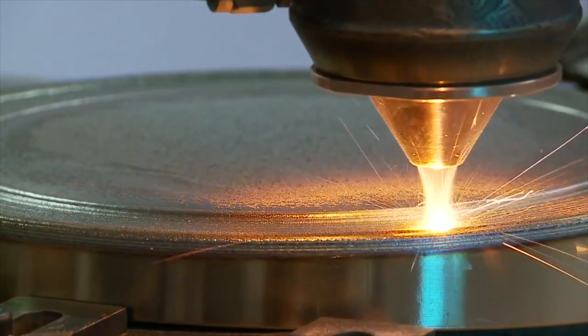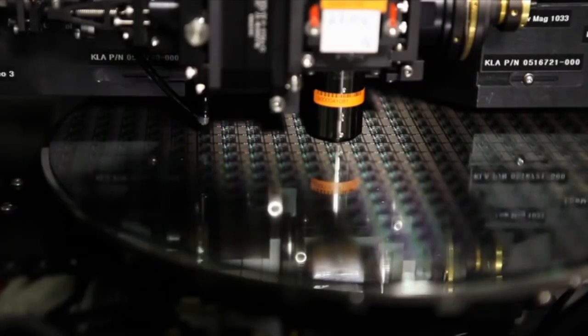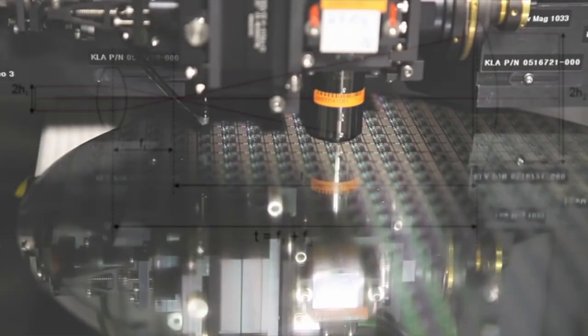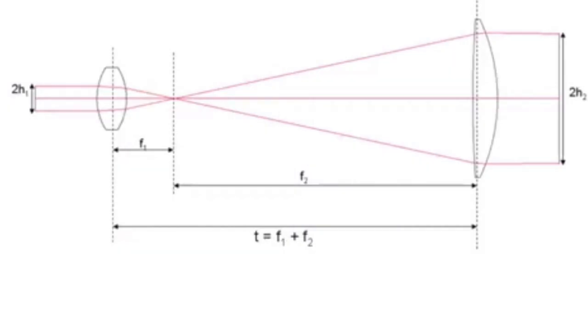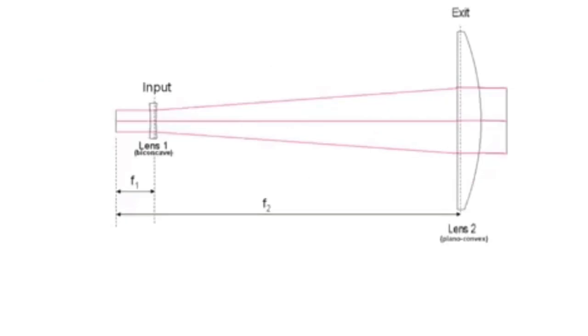In most cases, the beam exiting the laser will not have the size, shape, or intensity profile needed for the application. To shape and focus the beam, optics are placed in the beam path.